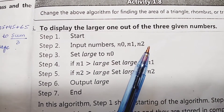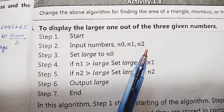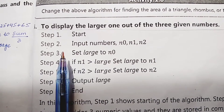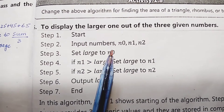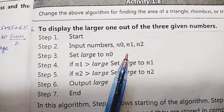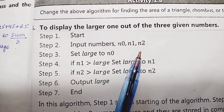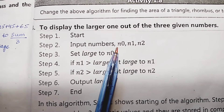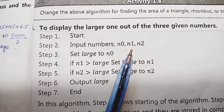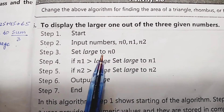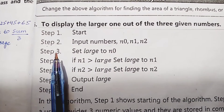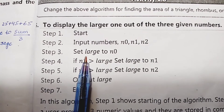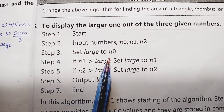Students, we have already discussed the flow chart of this problem. Step number 1 is the start of the algorithm. Step number 2, three numbers are entered and saved in computer memory with names n0, n1, and n2. In step number 3, the keyword SET is used for processing.